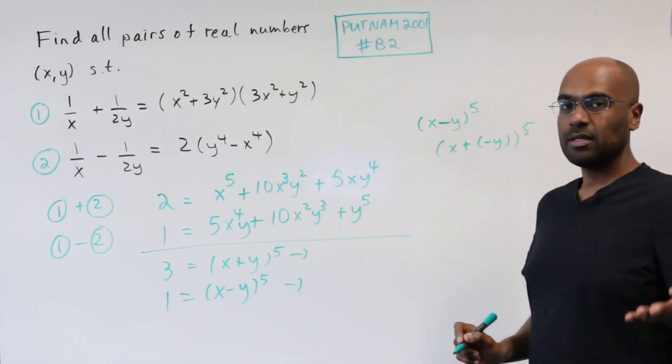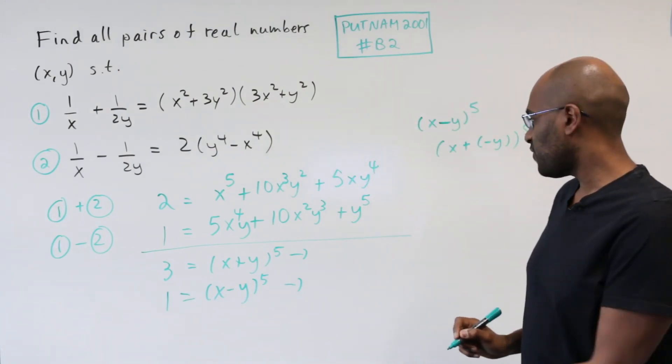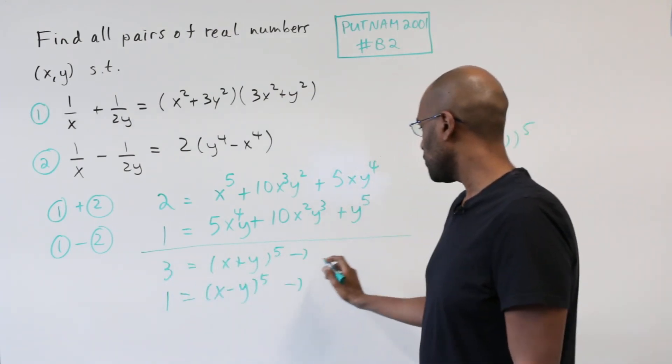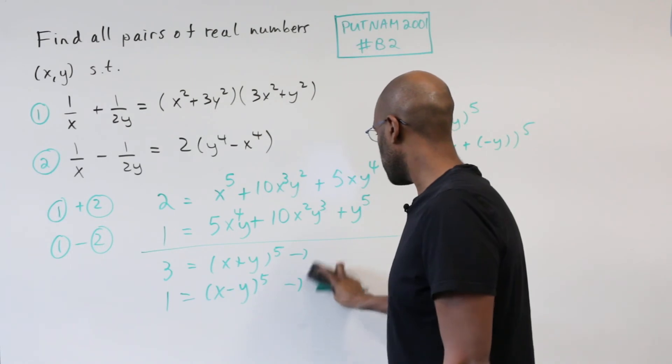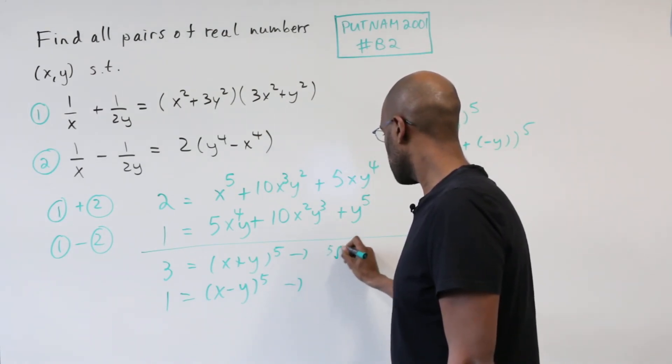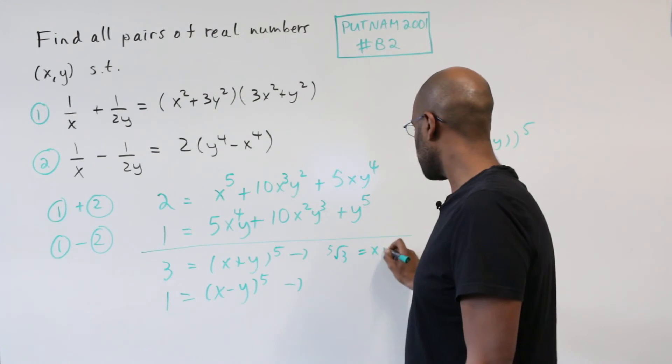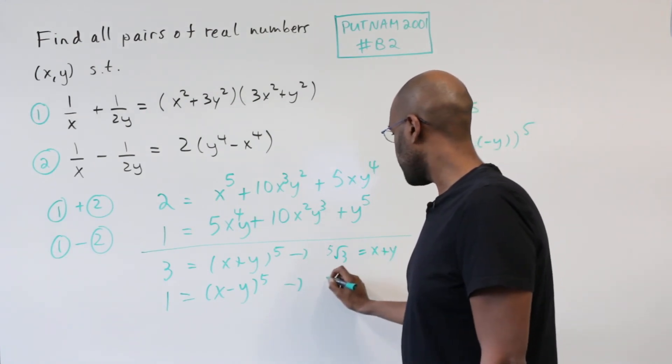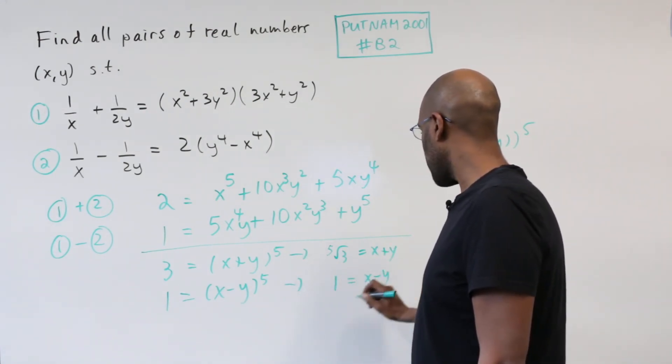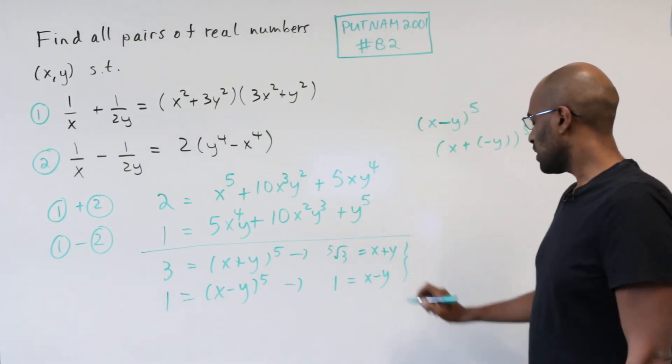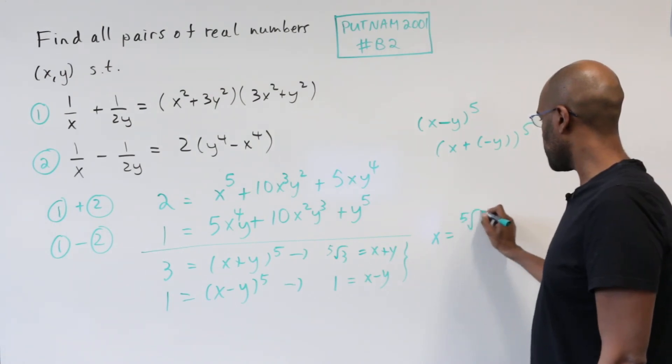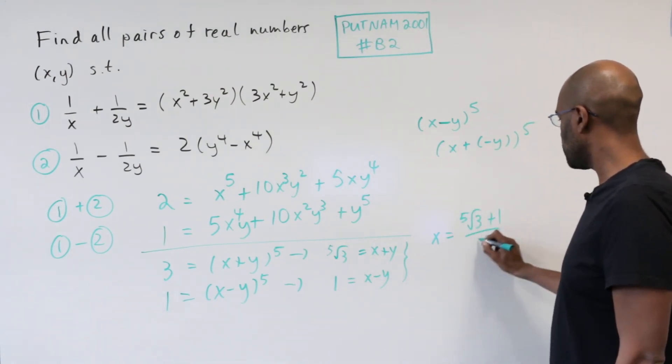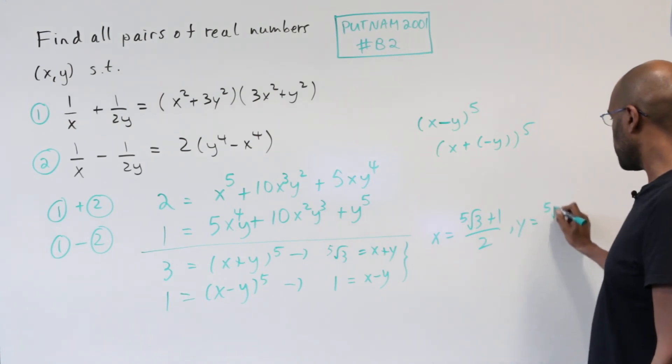Now the function t to the fifth is an increasing one. So this thing is going to have one real solution, which is the fifth root of 3. So the fifth root of 3 has to be x plus y, and similarly the fifth root of 1, which is 1, has to be x minus y. And that gives us that if we add these two equations, x is the fifth root of 3 plus 1 over 2, and y is the fifth root of 3 minus 1 over 2.